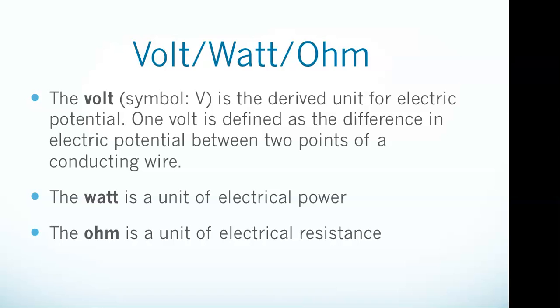And then finally we have volt, watt, and ohm. The volt is the derived unit for electric potential. One volt is defined as the difference in electric potential between two points of a conducting wire. The watt is a unit of electrical power. The ohm is a unit of electrical resistance.